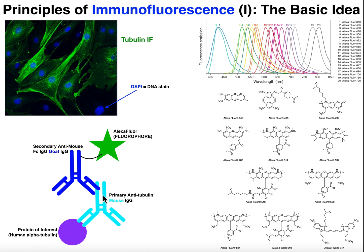We have to have a primary antibody that binds to this protein of interest. We're going to name it: primary antitubulin mouse IgG. Just to review from the western blotting video, IgG is the class of antibody — there are five classes of antibodies. Usually for western blotting, immunofluorescence, and ELISA, it's going to be IgGs that we use, because they tend to be very specific antibodies.